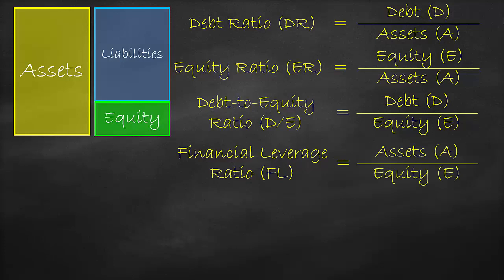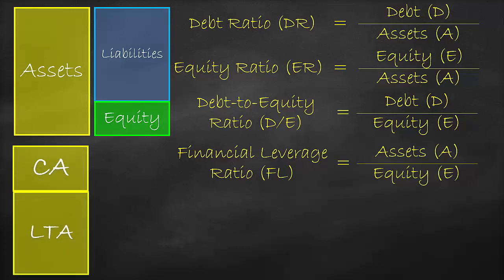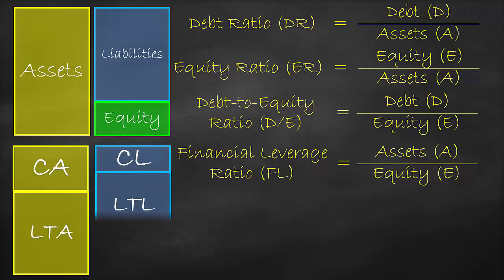Assets are classified as current assets and long-term assets. Long-term assets are composed of fixed assets and intangibles, such as copyright. Liabilities are classified as current liabilities and long-term liabilities, also known as non-current liabilities. Then, we have equity.